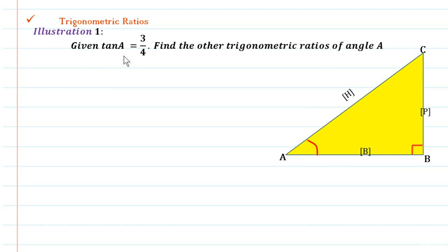Because tan is equal to 3 by 4, this can be written as perpendicular upon base, and with respect to the triangle which we have taken, it can be written as equal to BC upon AB.